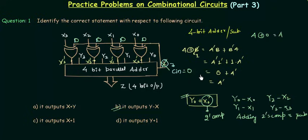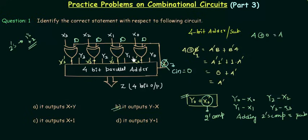There is one important thing: just complementing X0 gives the 1's complement, not the 2's complement. To get the 2's complement, I need to add 1 to the 1's complement. You can see that the CIN is fed into the adder and is added with the 1's complement — in this way we obtain the 2's complement. So CIN=1 simultaneously selects subtraction mode and provides the +1 needed for 2's complement.